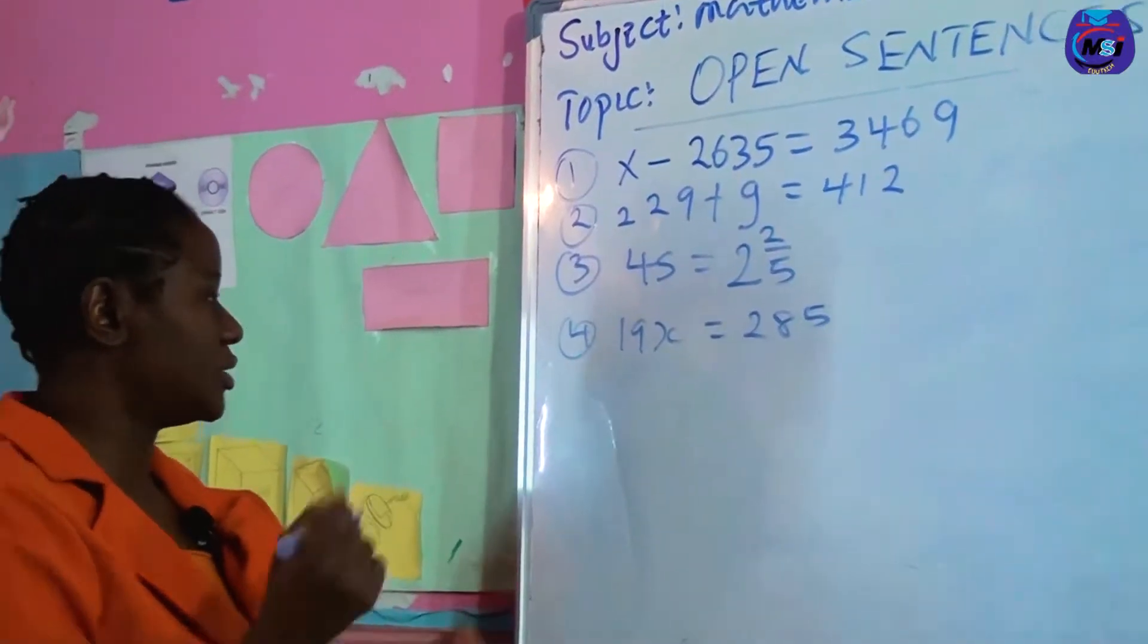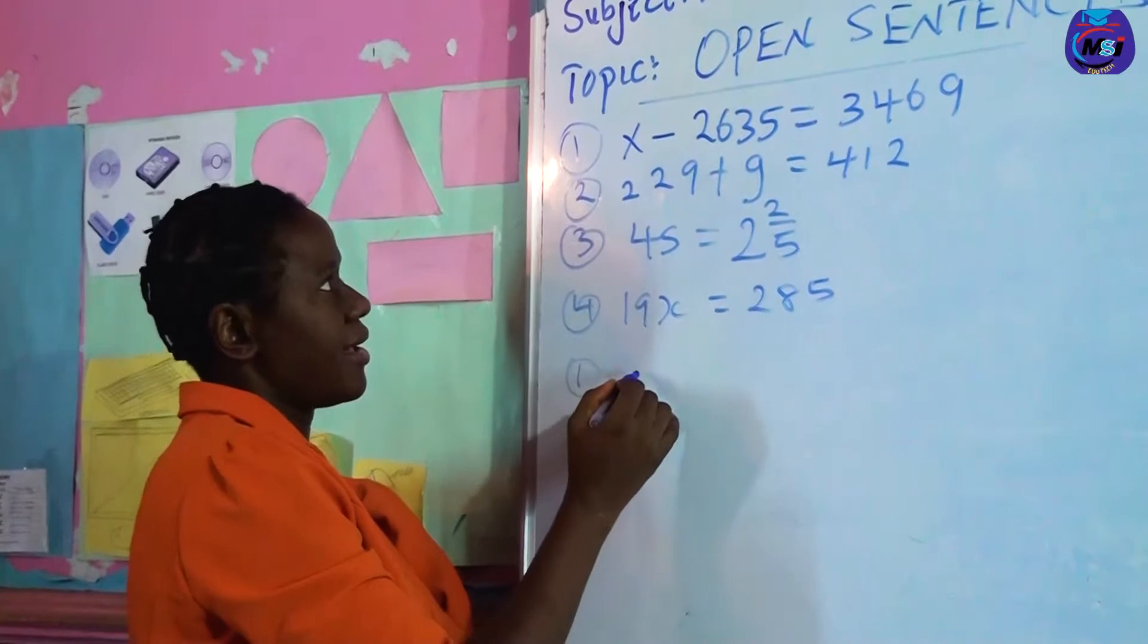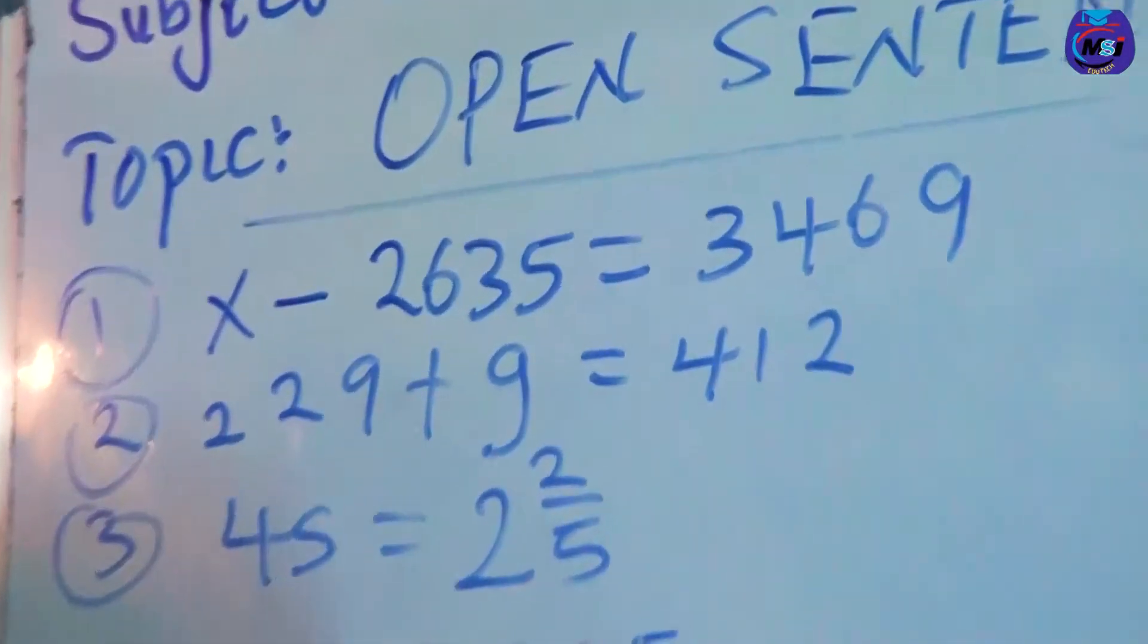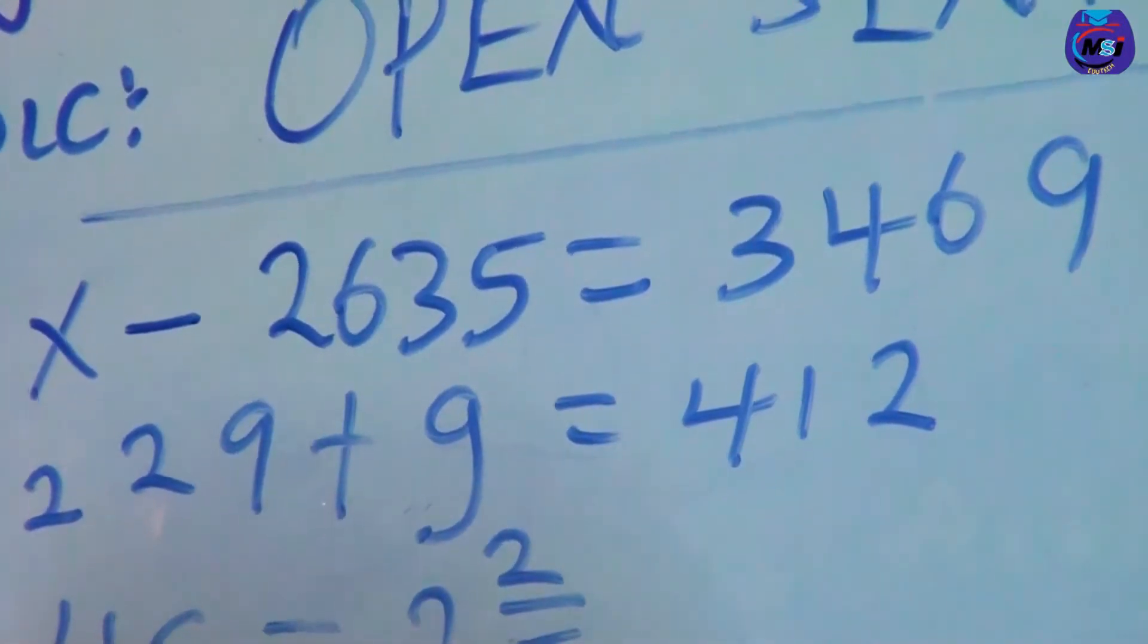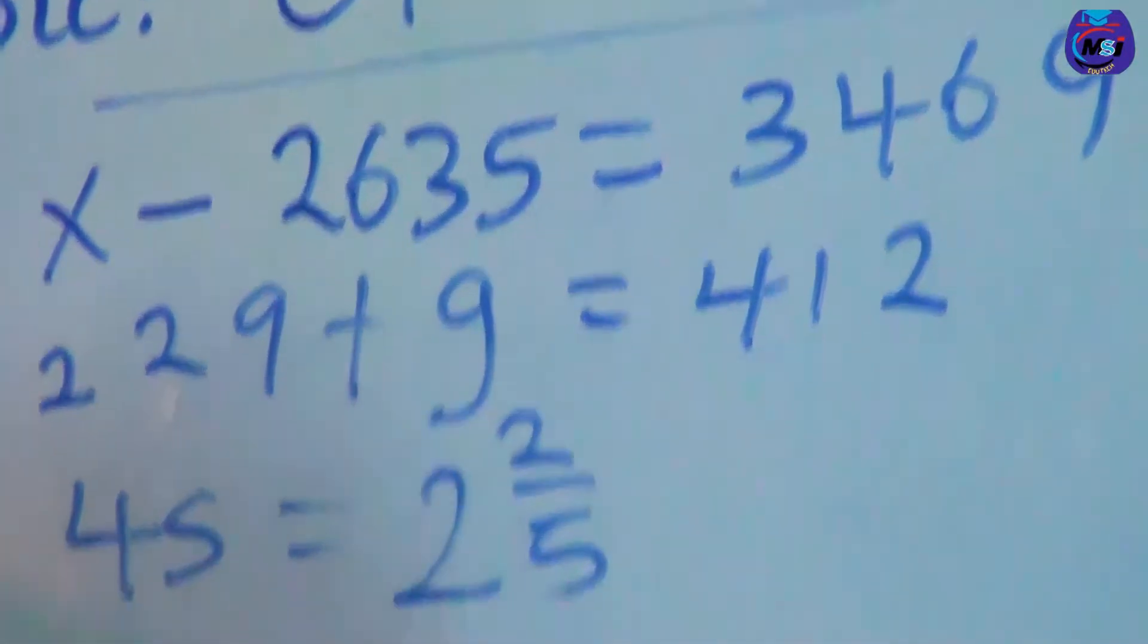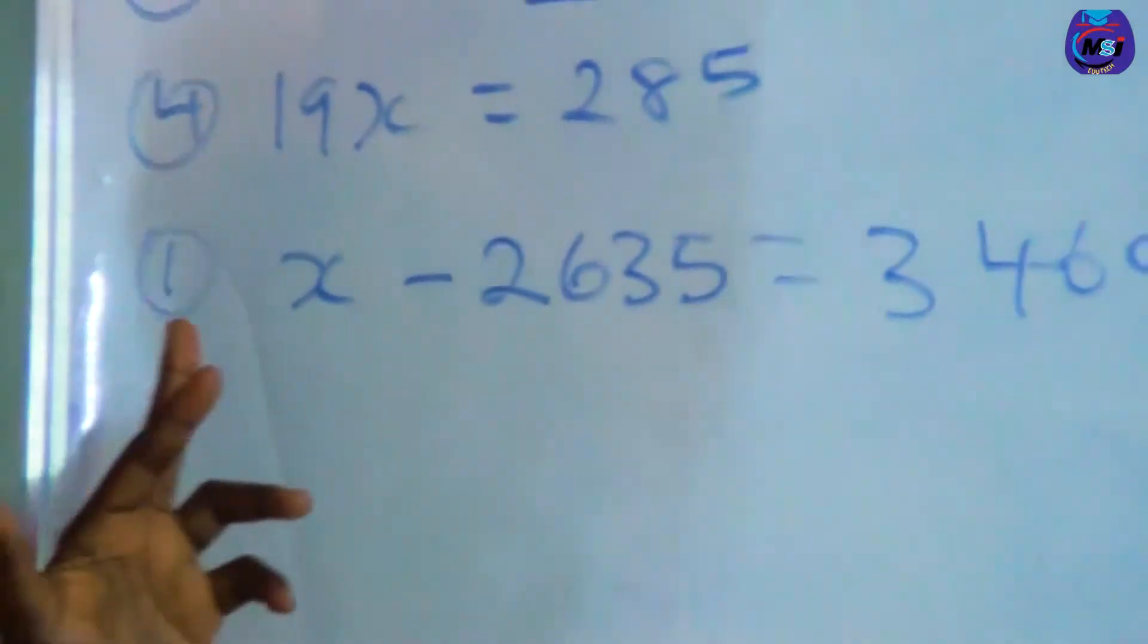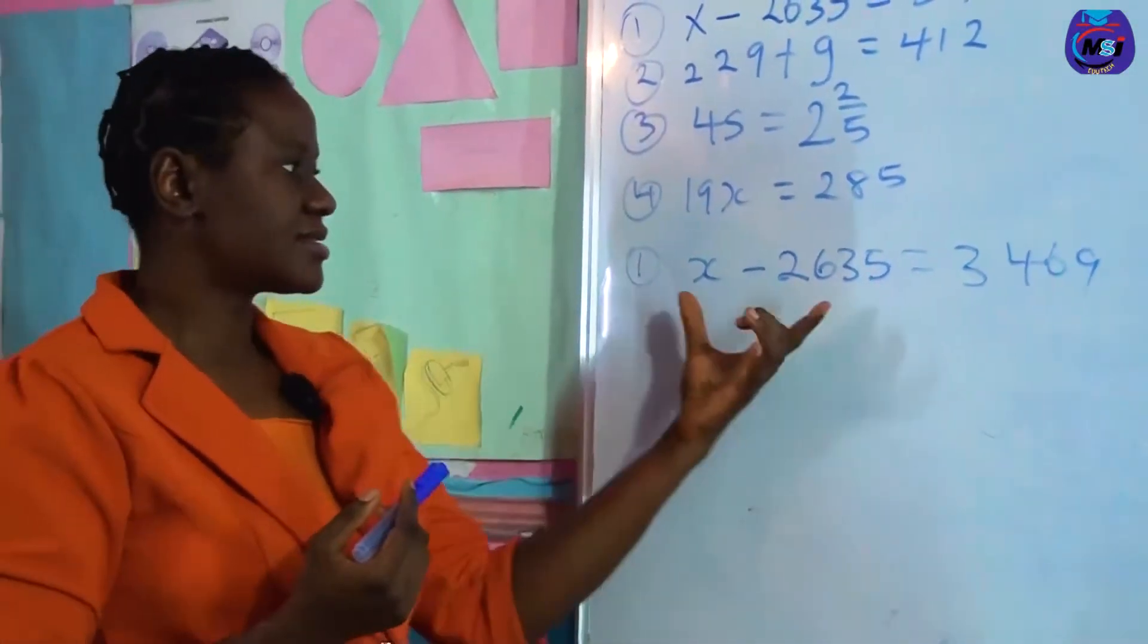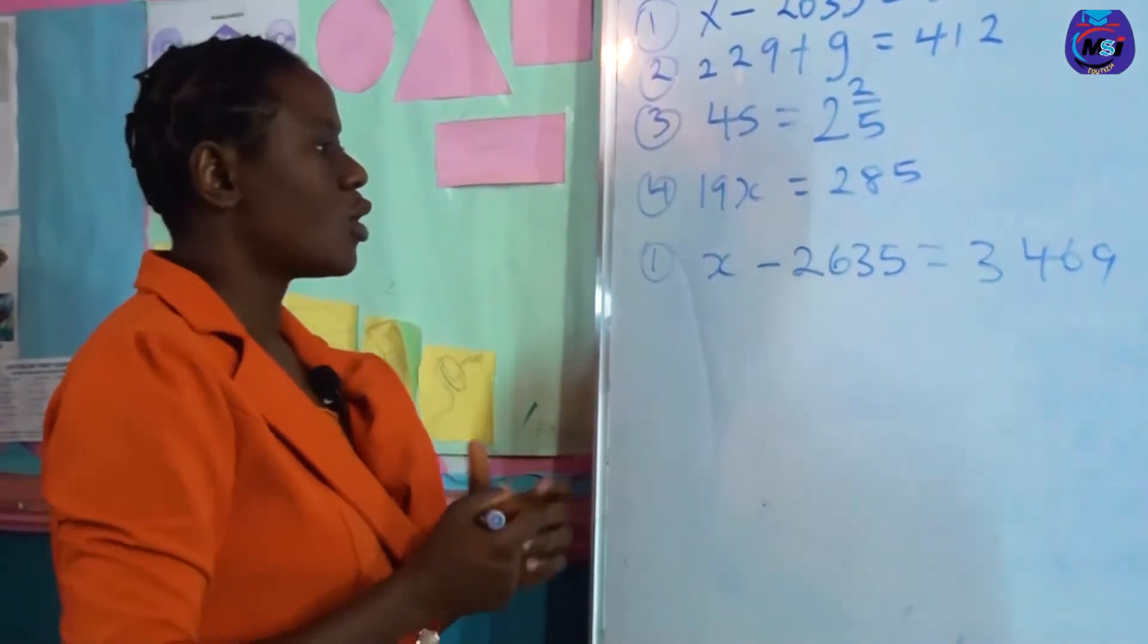In example one, x minus 2635 equals 3469. Looking at this question we are looking for x.